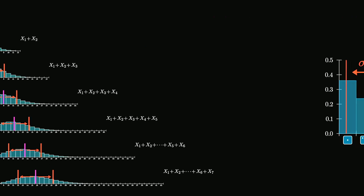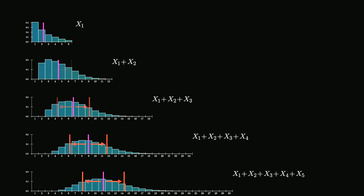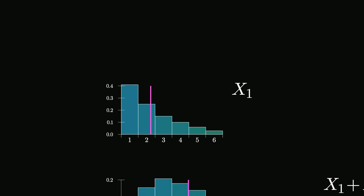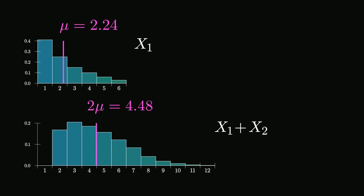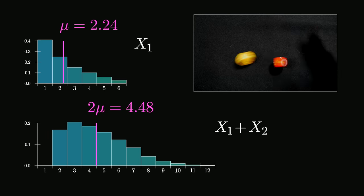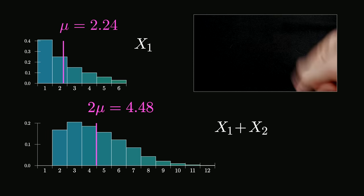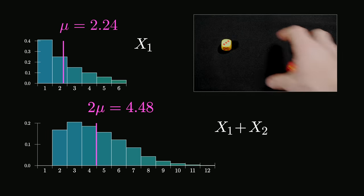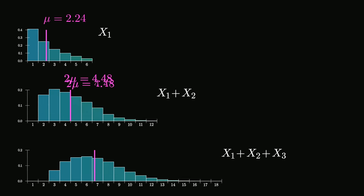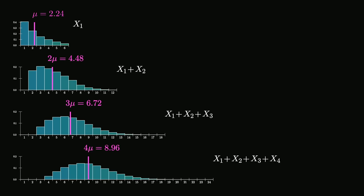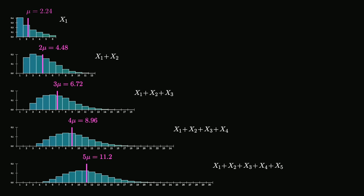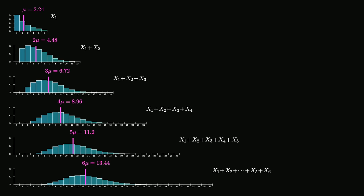Looking back at our sequence of distributions, let's talk about the mean and standard deviation. If we call the mean of the initial distribution mu — which for the one illustrated happens to be 2.24 — hopefully it won't be too surprising that the mean of the next one is 2 times mu. That is, you roll a pair of dice and want to know the expected value of the sum — it's 2 times the expected value for a single die. Similarly, the expected value for a sum of size 3 is 3 times mu, and so on. The mean just marches steadily to the right, which is why our distributions seem to be drifting in that direction.